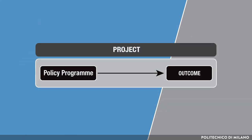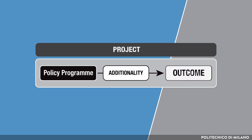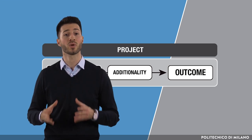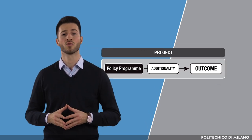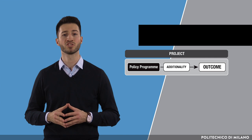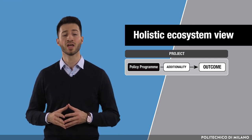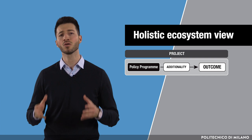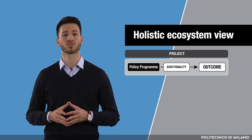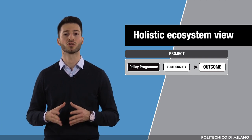If we do find a contribution of the policy program to an outcome, we say that there is an additionality of that project with respect to the other projects or simultaneous developments and prevailing conditions in the environment. So, if we aspire to understand the real extent of the program's contribution to the observed change, we should have a holistic ecosystem view and identify, measure, and include in the analysis the other important factors that could potentially influence the change too.